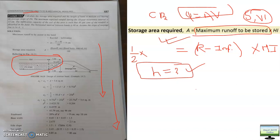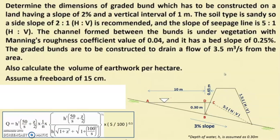These are the two basic types of problems for contour bund and graded bund. For the GATE exam and JRF exam — in JRF they may ask: which type of bund is used for storage of water? Options: (a) side bund, (b) contour bund, (c) graded bund, (d) lateral bund. The answer is contour bund. In GATE they will give numerical problems.